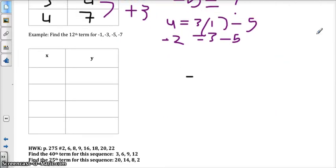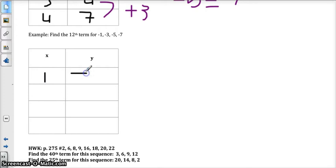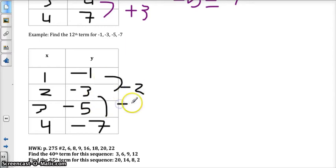Let's check this last one. Okay. First term is negative 1, second term is negative 3, third term is negative 5, fourth term is negative 7. So it looks like the pattern here is negative 2. So we have y equals negative 2x plus something.